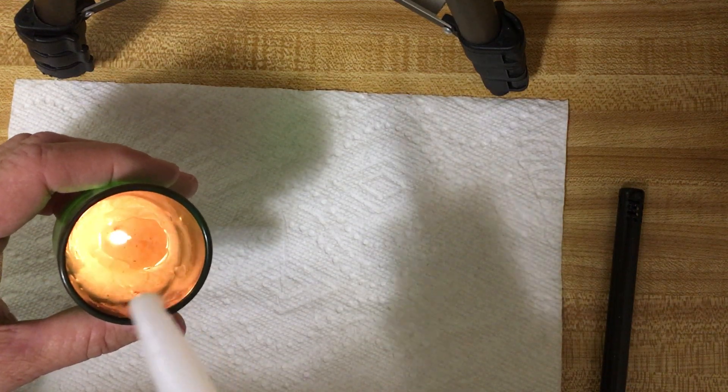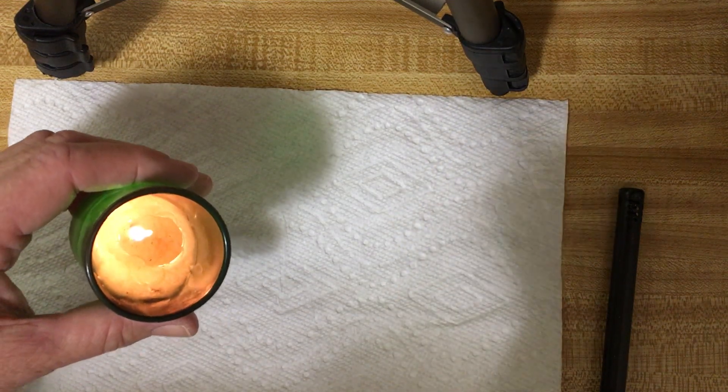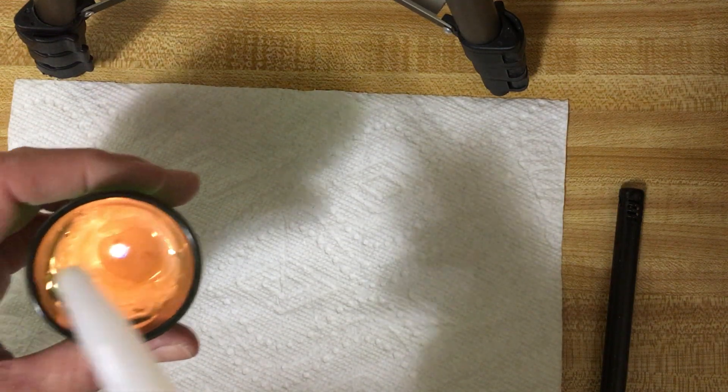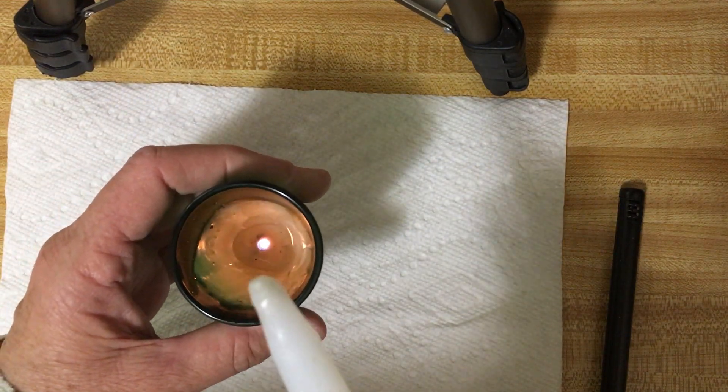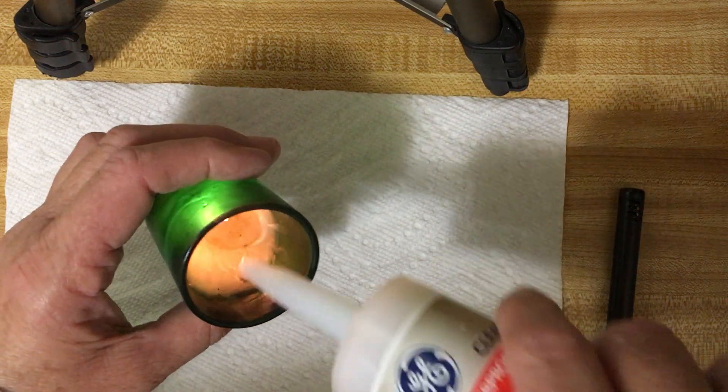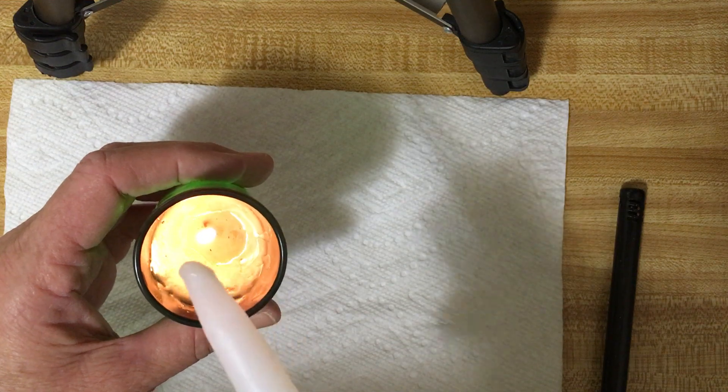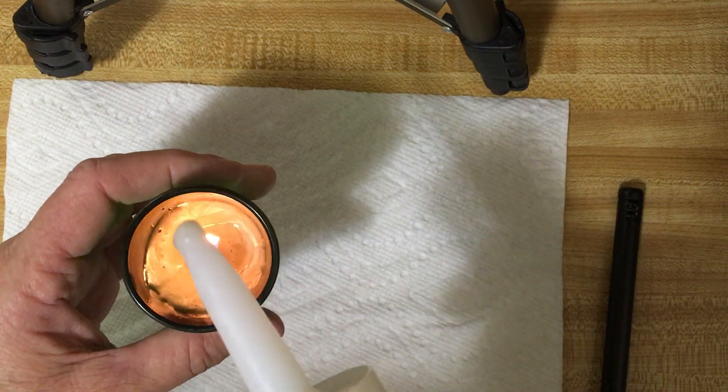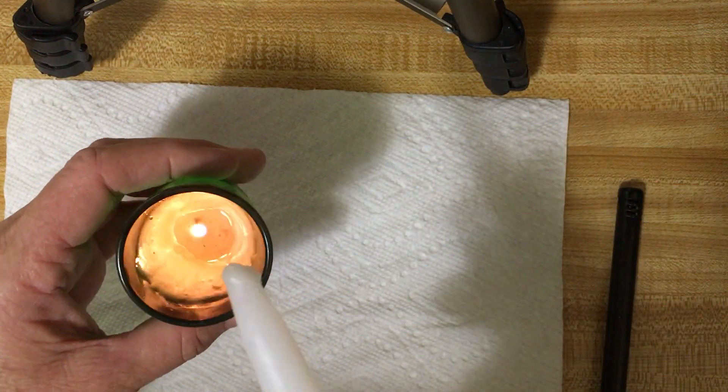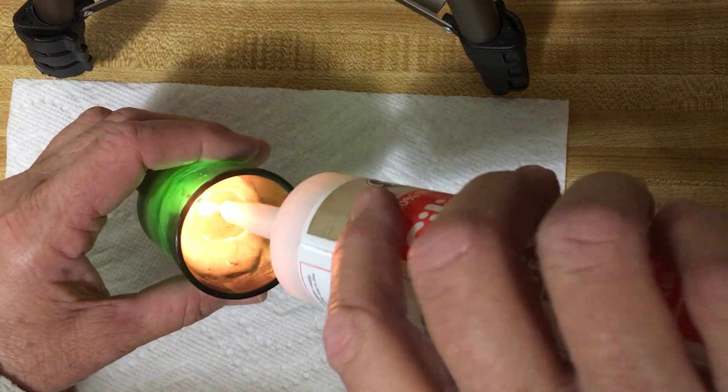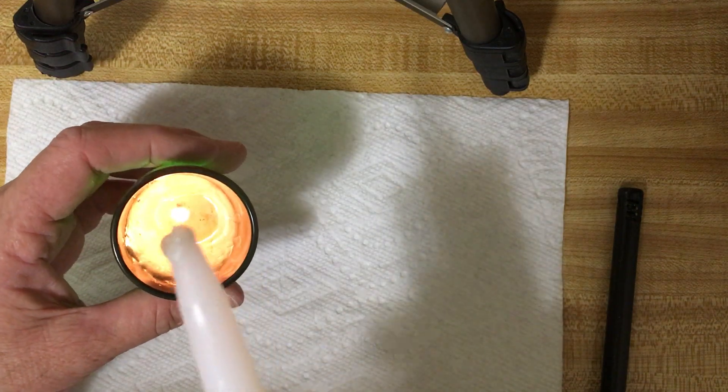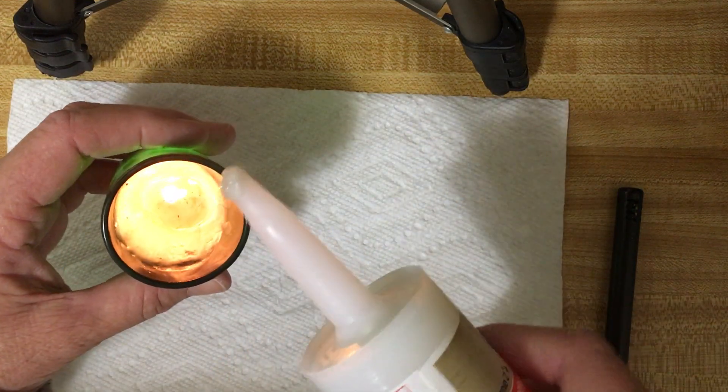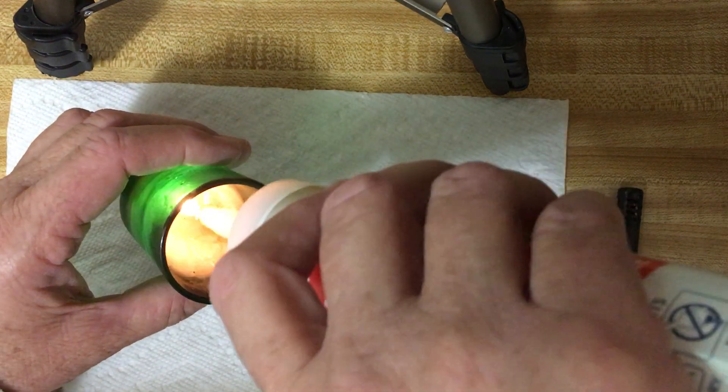You're sealing the tip of that caulking with some wax - any candle will do. Blow on the tip and it'll make it dry faster or harden faster. A nice little bead on there, just keep rolling it around. As you can see, it starts to form a nice seal of wax to keep your silicone or caulking of any type from hardening.